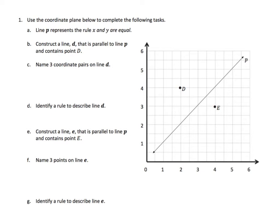It tells us to construct a line D that is parallel to line P and contains point D. I want to point something out here. If we look at this line P, if we look at where it intersects each one of these grid points here, and if we go up 1, we go across 1, up 2, across 2.